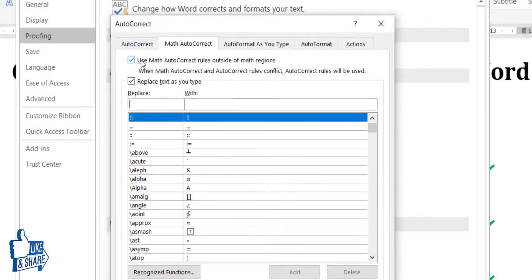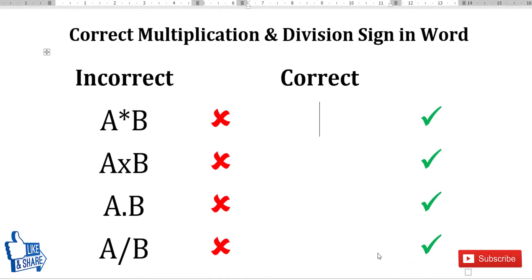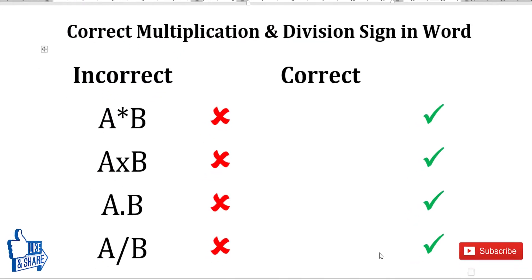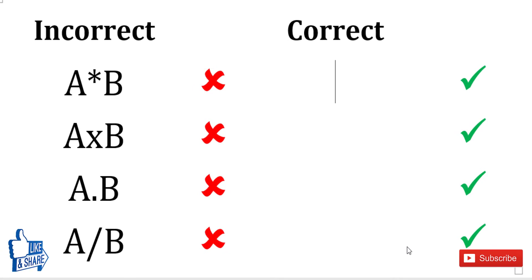Once this is checked, you are ready to write the correct multiplication and division signs. You have to do this just once - even if you restart Microsoft Word, the setting remains and you can use it going forward.